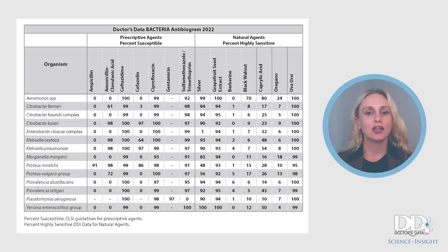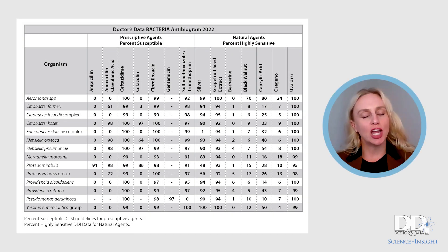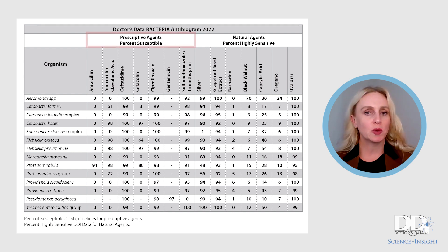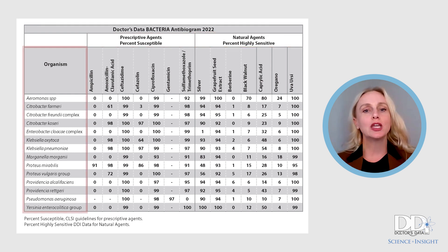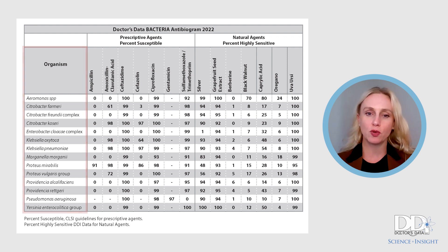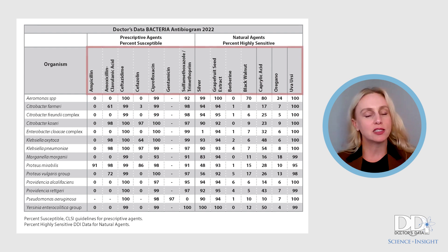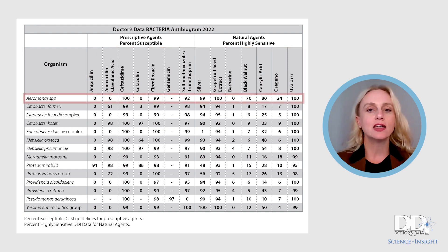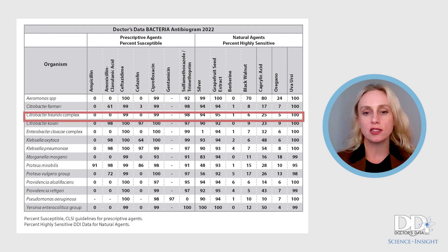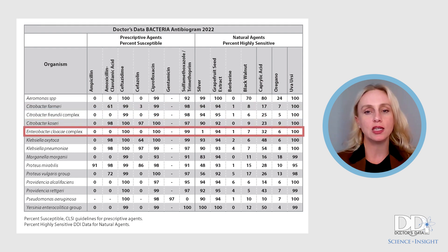The bacteria antibiogram represents 14 bacteria with prescriptive agents as percentage susceptible and natural agents as percentage highly sensitive. You can look at individualized organisms that may be cultured in your patient's report, as well as take note of antimicrobial resistance trends. Each organism has a unique profile.